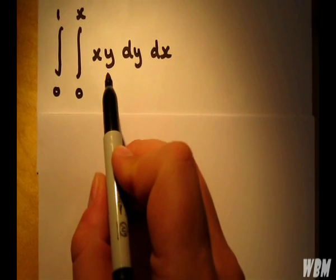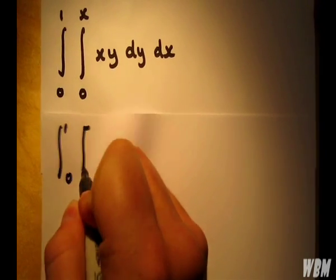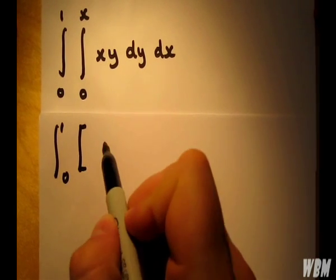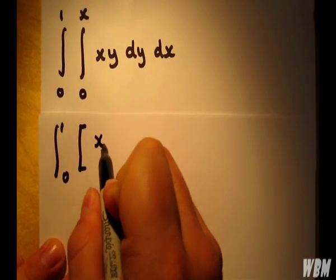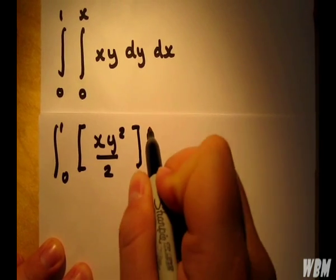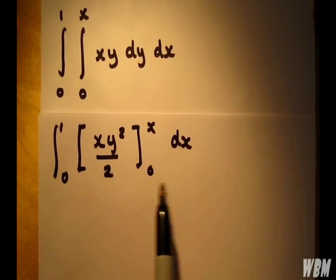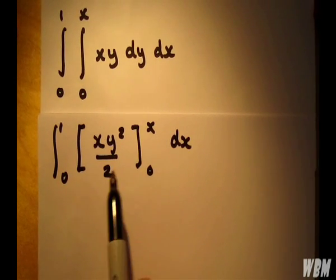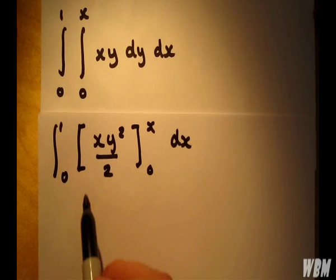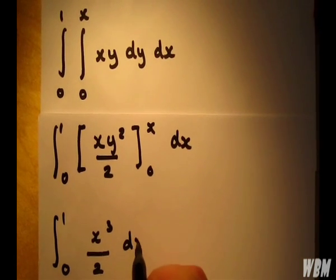For integrating with respect to y first, it's quite simple. We end up with xy squared over 2 between x and 0. The first thing to notice is we've got a 0, so we don't have to worry about the lower limit. So we end up with x cubed over 2 with respect to x.